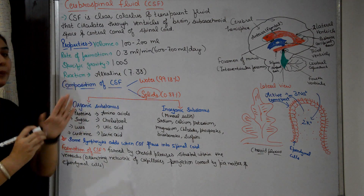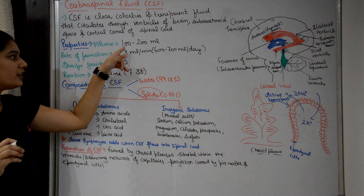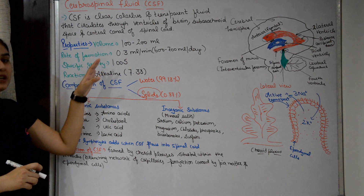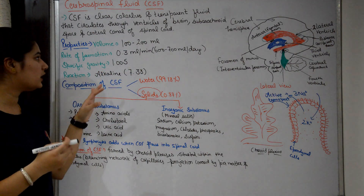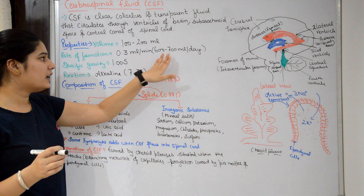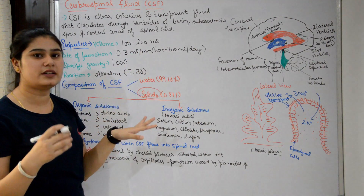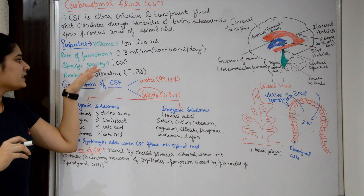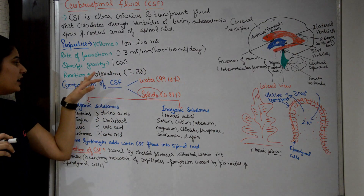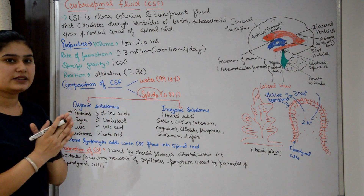The properties of CSF include: a volume of 100 to 200 ml, a rate of formation of 0.3 ml per minute — which means 600 to 700 ml per day — a specific gravity of 1.005, and a pH of 7.33.